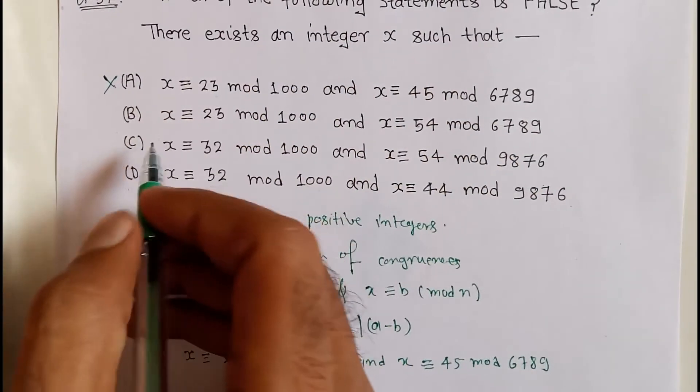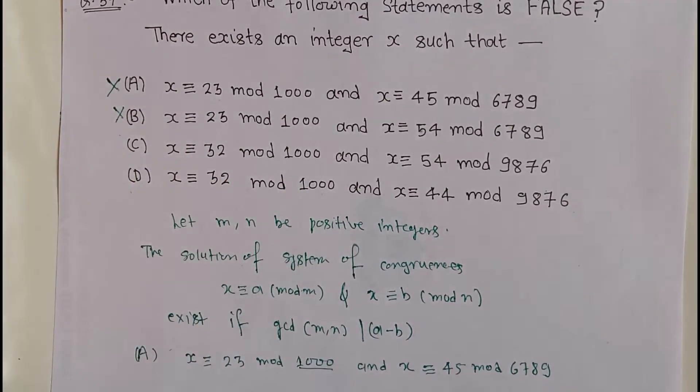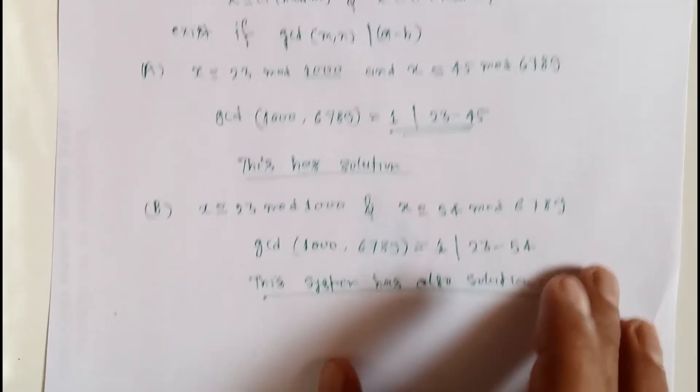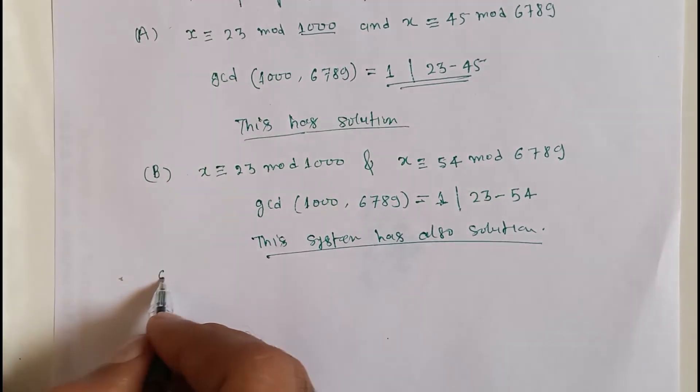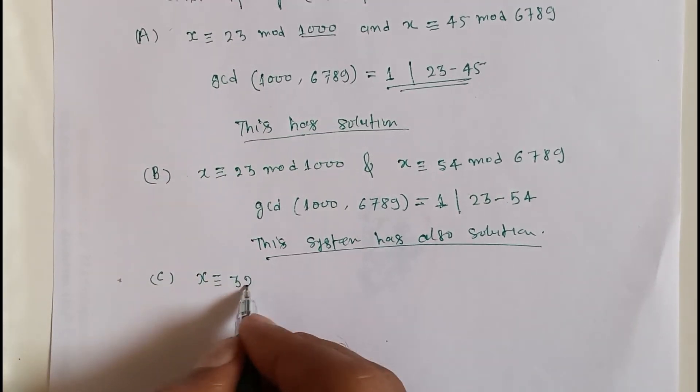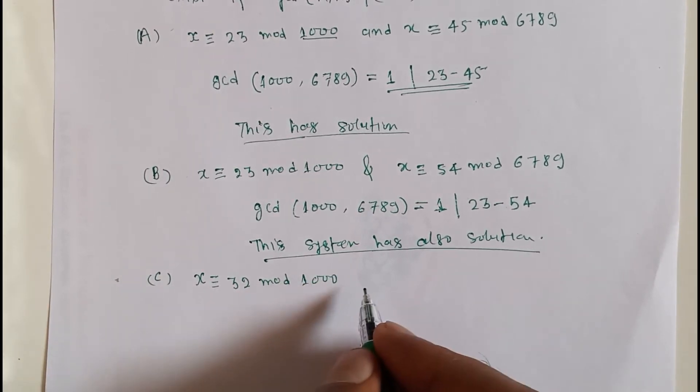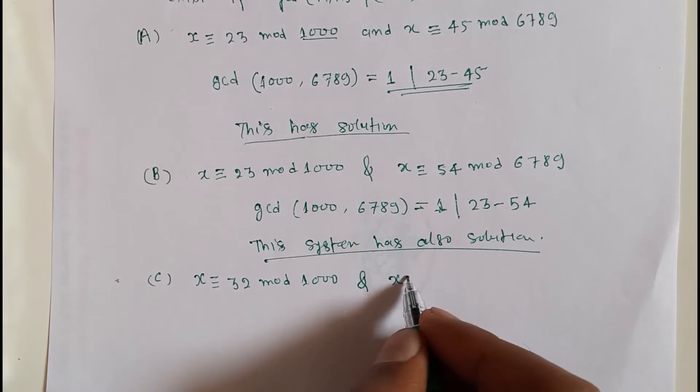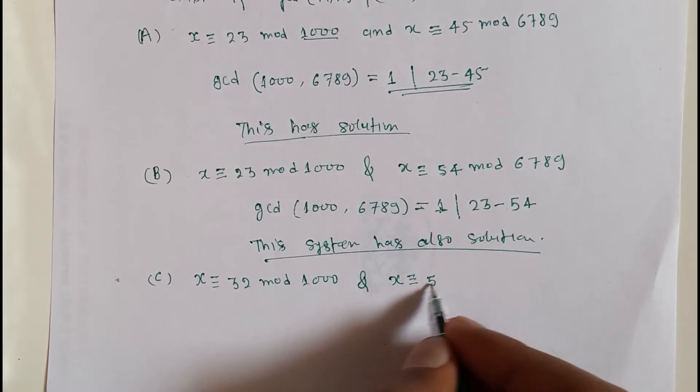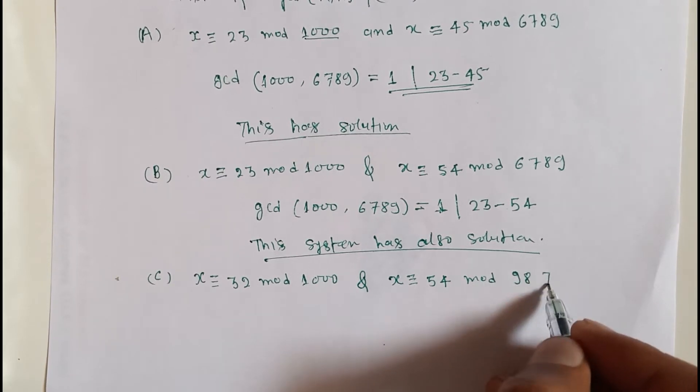So option B is also wrong. Option C: x congruent to 32 mod 1000 and x congruent to 54 mod 9876.